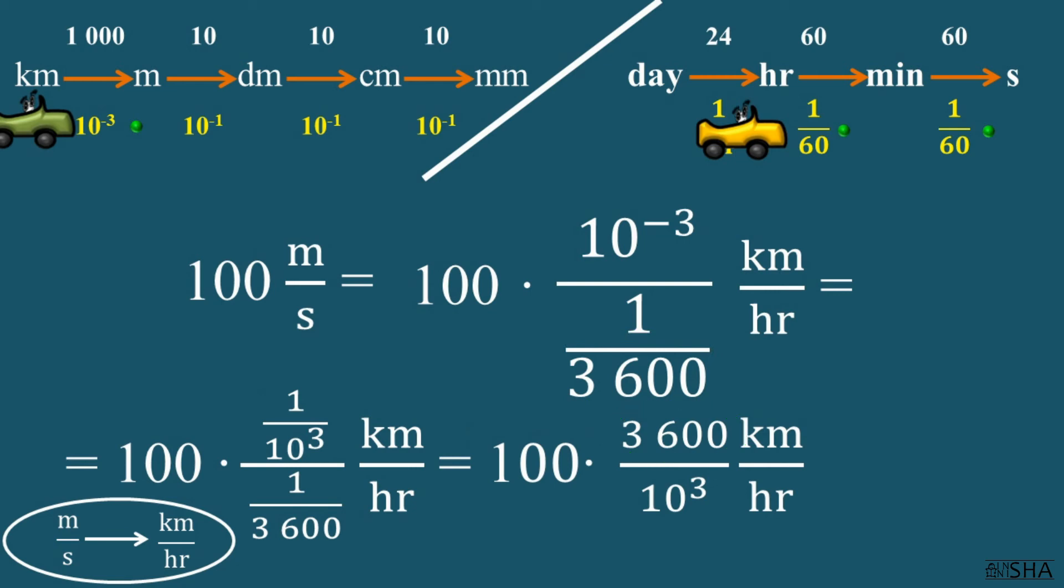How did we do this trick? Let's recall that to divide fractions, you need to multiply the first fraction by the reciprocal of the second fraction. In other words, you simply need to turn the second fraction upside down. After simplifying, we get 360 kilometers per hour.